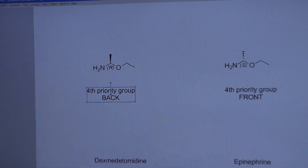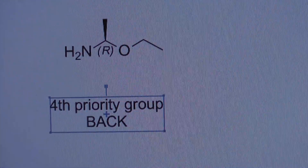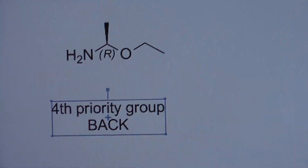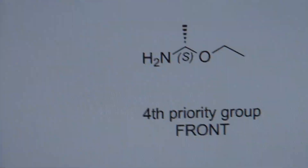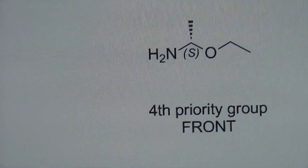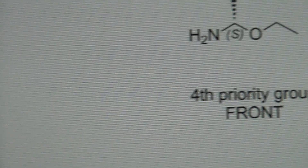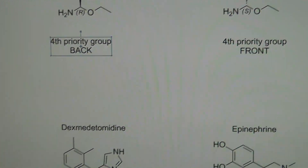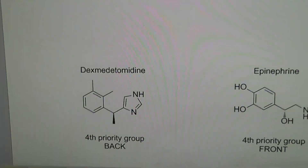We just solved the two cases up above, so you can see the final answer. The ChemBioDraw software can conveniently show that that one is R and this one is S, indicated in parentheses below the carbon.